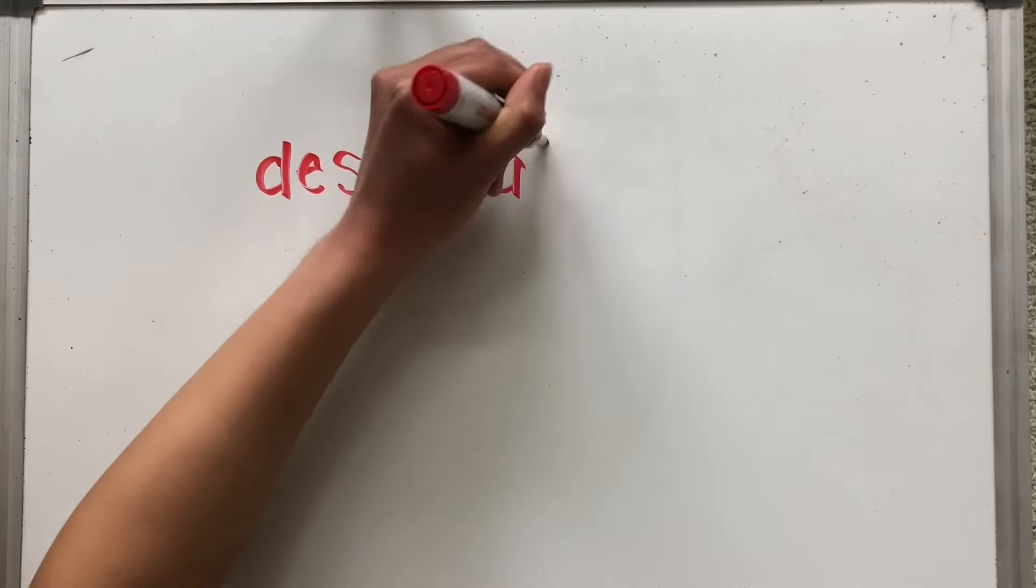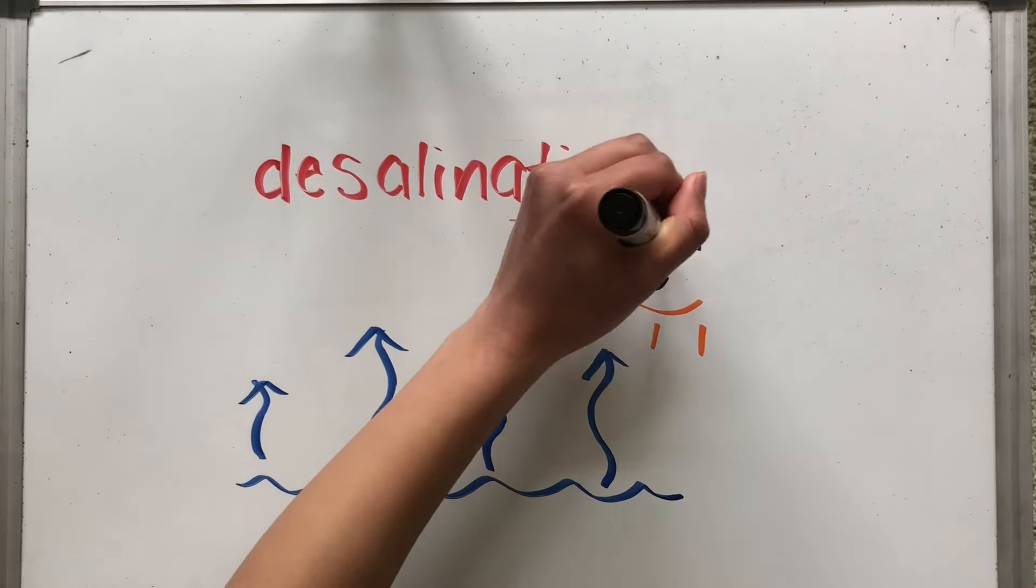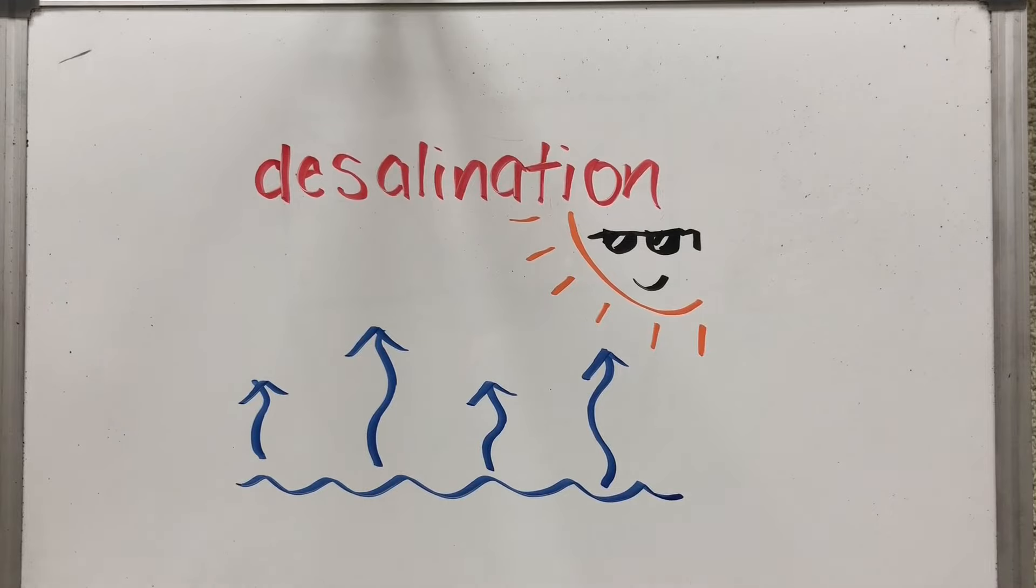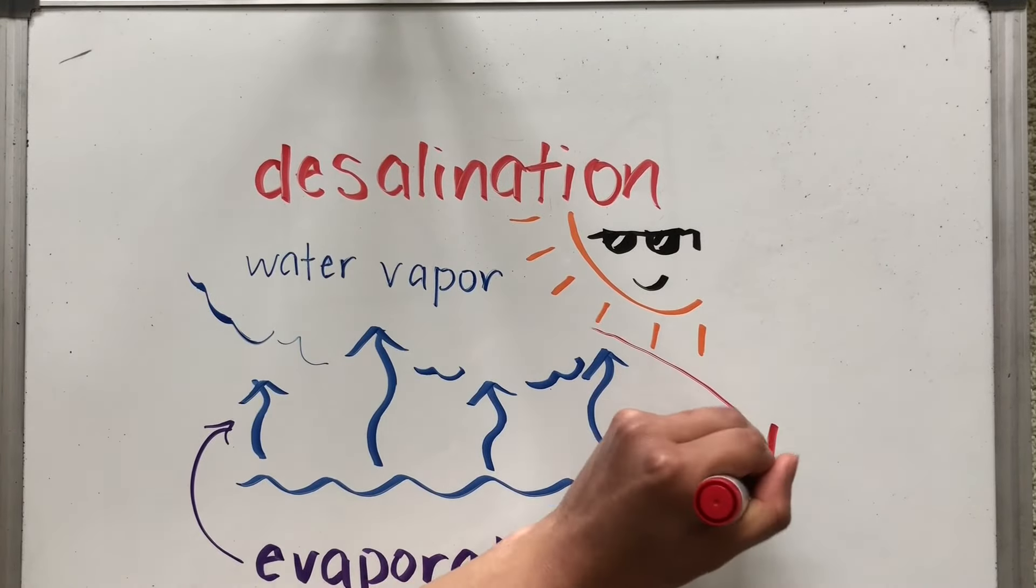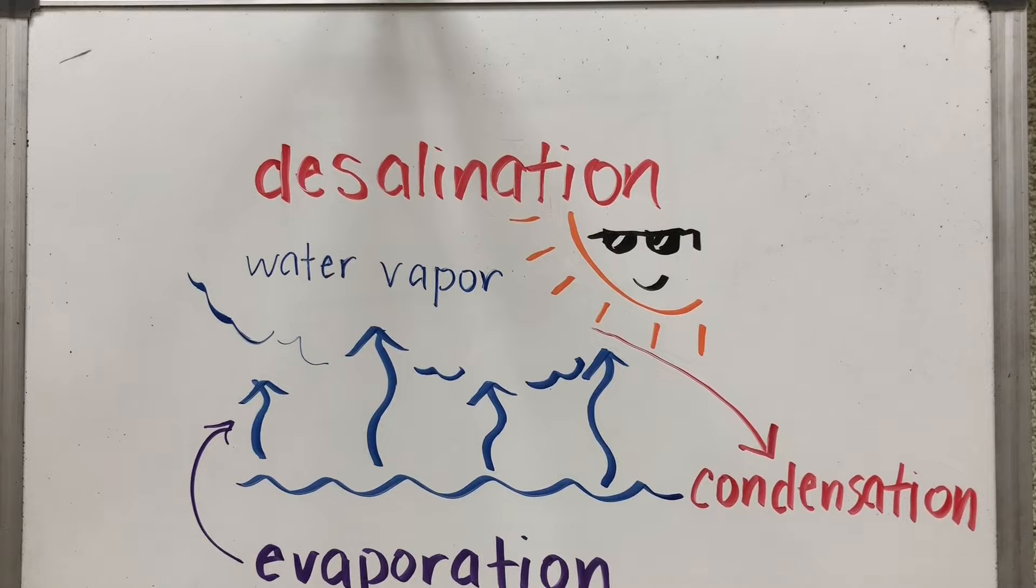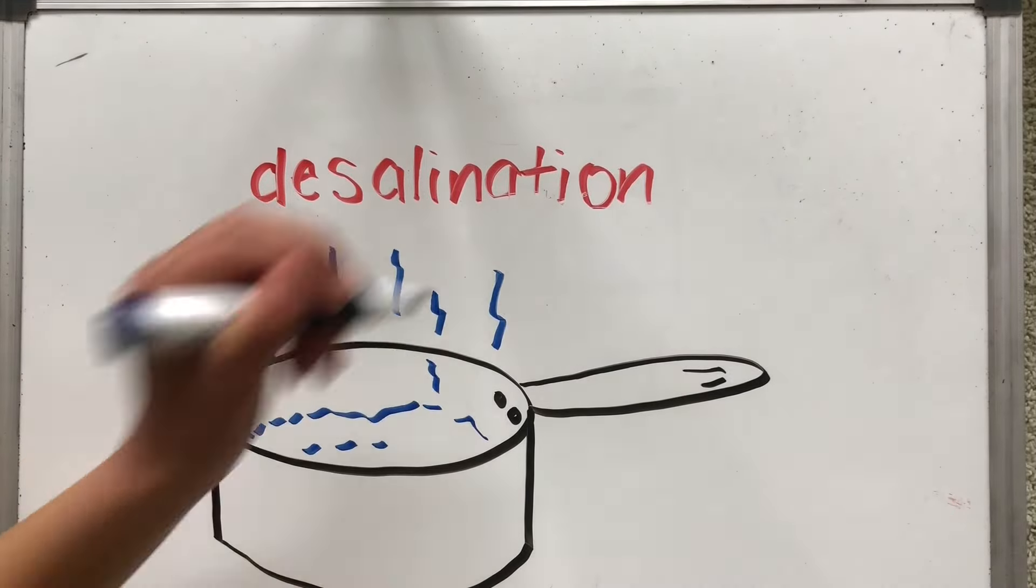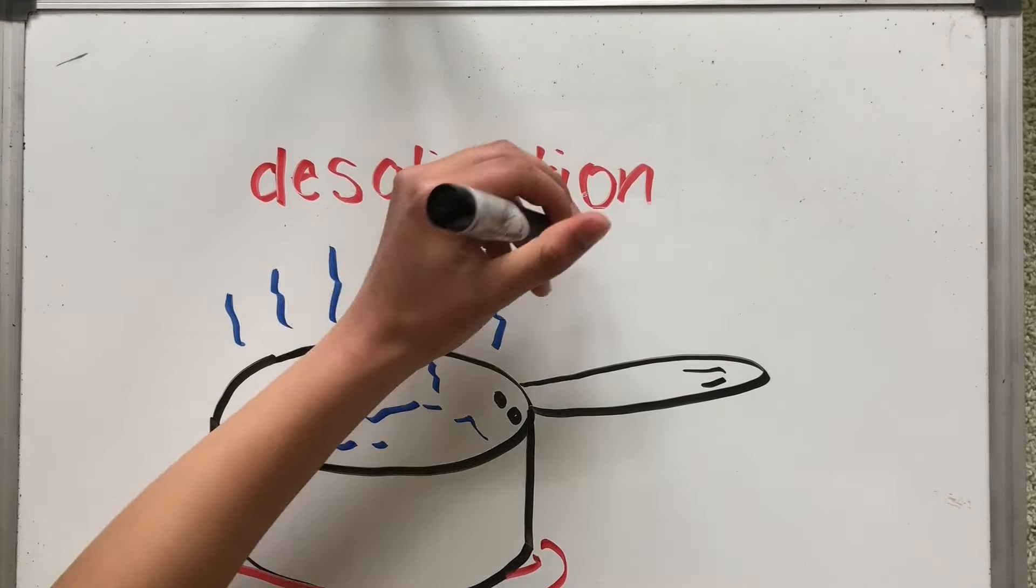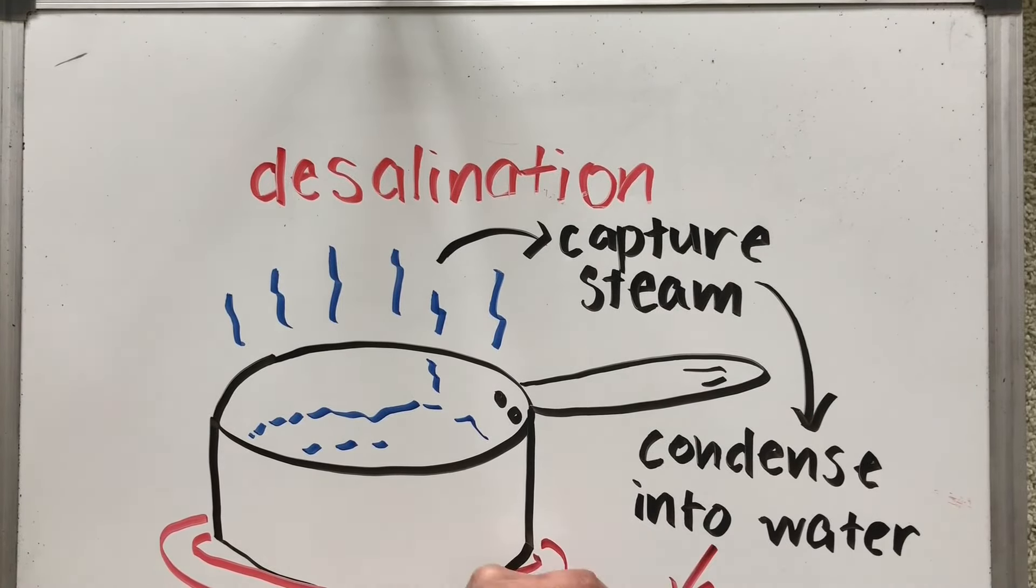One way in which desalination occurs naturally is using the sun's heat to heat up the ocean. When the water vapor rises from the ocean, it leaves all the salt behind. By collecting this water vapor, essentially, you have taken salt water and removed the salt. You can also collect this water vapor and condense it back to form liquid water. This process can also be done on a smaller scale. If you were to heat up a pot of salt water and collect the water vapor to condense it back into liquid, you wouldn't have to rely on the heat of the sun.